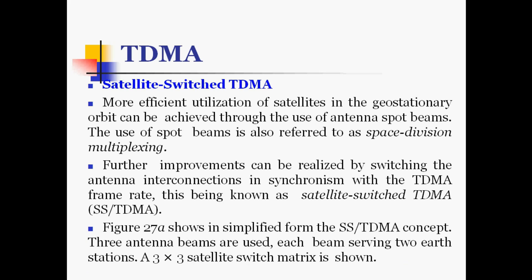For the satellite switched TDMA, the most efficient utilization of the satellite in geostationary orbit can be achieved through antenna spot beams, also referred to as space division multiplexing. Further improvement can be realized by switching the antenna interconnections in synchronism with the TDMA frame rate — this is known as satellite switched TDMA (SS-TDMA). Spot beam antennas cover specific areas on the surface of the Earth.